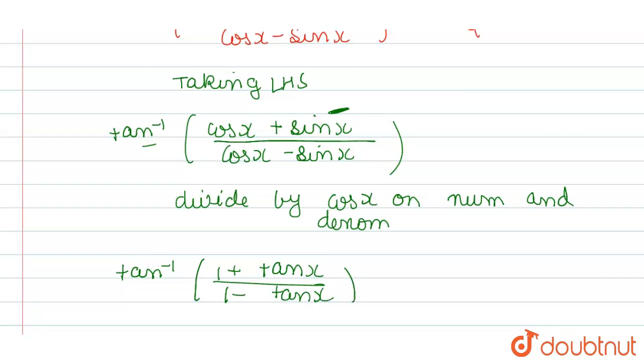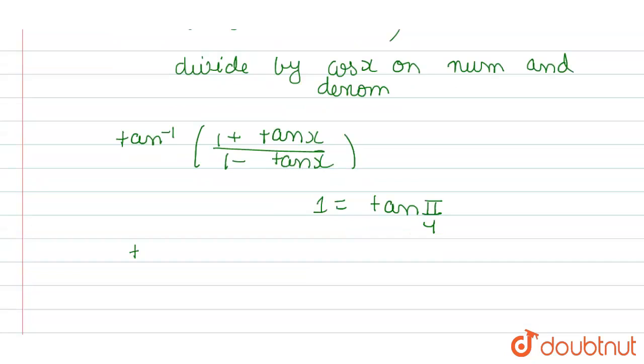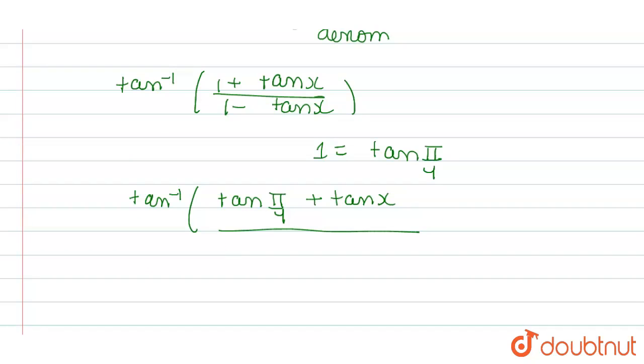Now, we can write down 1 as tan pi by 4. So it will become tan inverse of tan pi by 4 plus tan of x divided by 1 minus tan of pi by 4 into tan of x.